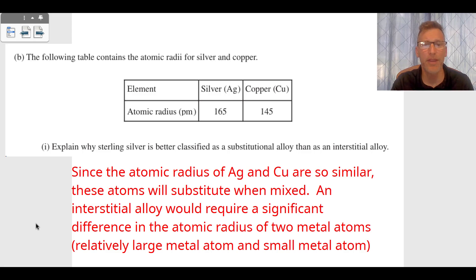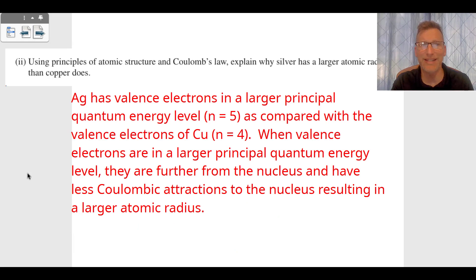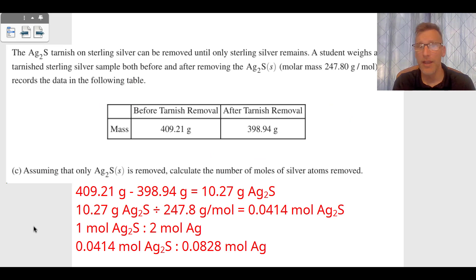Using principles of atomic structure and Coulomb's law, explain why silver has a larger atomic radius than copper does. It's all about the valence electrons and where they're located. Silver has valence electrons that are located in a larger principal quantum energy level, the n equals five, as compared with the valence electrons of copper, the n equals four. When those valence electrons are in a larger principal quantum energy level, we understand they are further from the nucleus. They have less coulombic attraction to the nucleus, resulting in a larger atomic radius.